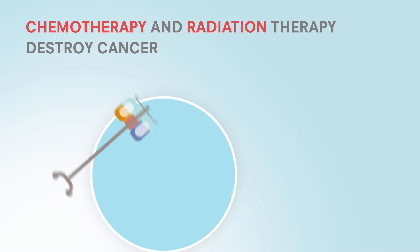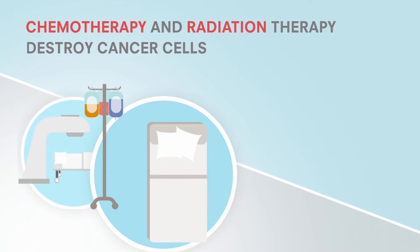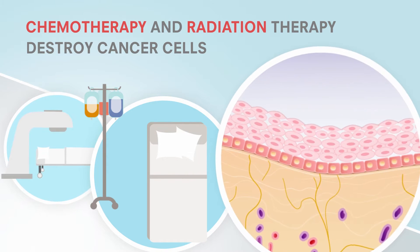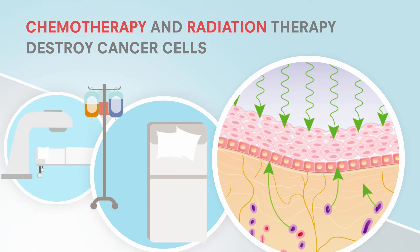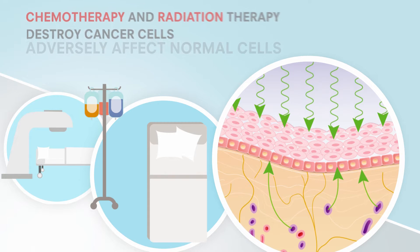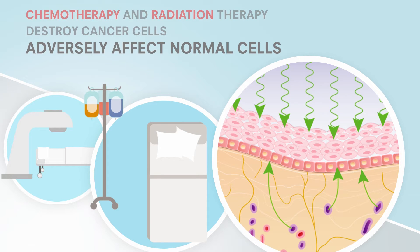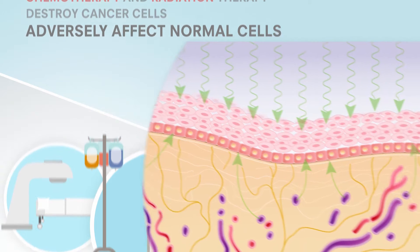Chemotherapy and radiation therapy are commonly used in the treatment of cancer because they prevent cancer cells from dividing. However, these treatments can also adversely affect normal cells in the body, including rapidly dividing cells lining the mouth and throat, known as the oral mucosa.